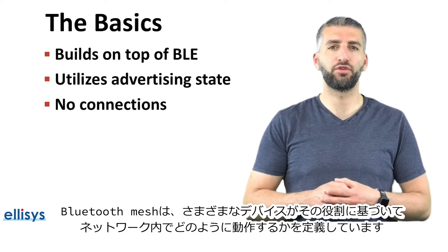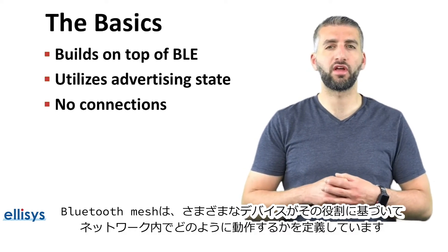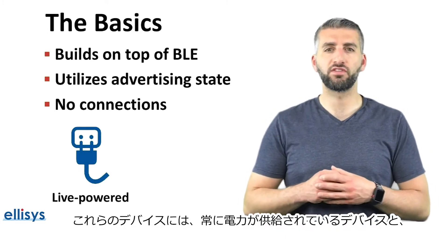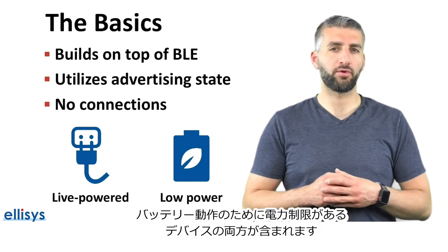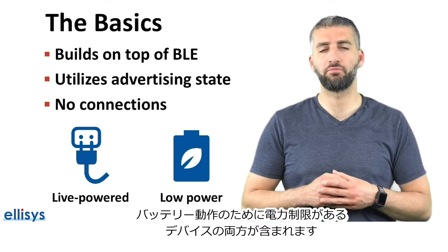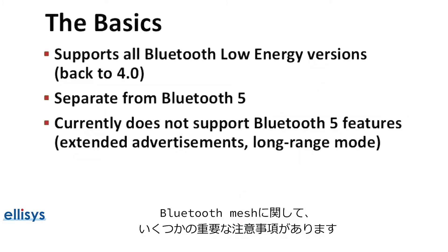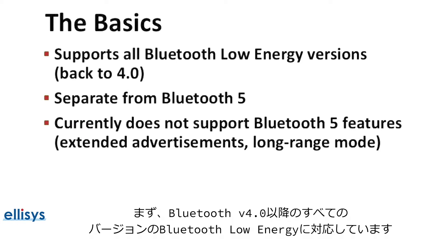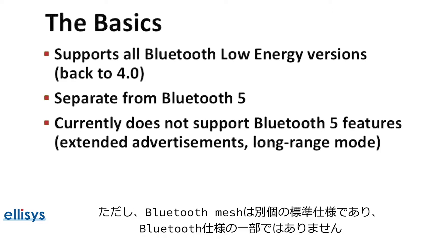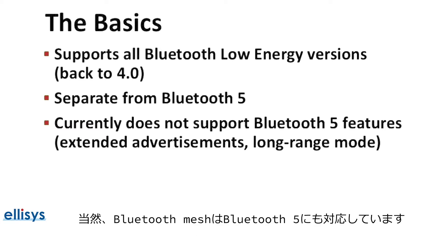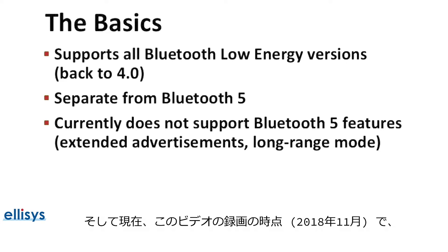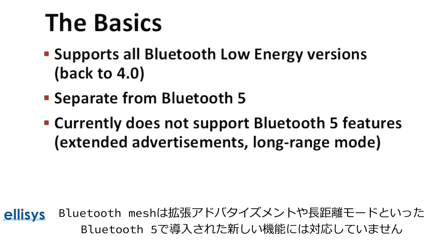The Bluetooth Mesh standard defines how different devices operate within the network based on their roles. These devices include both line-powered and more power-constrained ones that need to run on batteries. Bluetooth Mesh supports all versions of Bluetooth Low Energy going back to Bluetooth version 4.0. However, it is a separate specification and standard that's not part of the official Bluetooth specification, including Bluetooth 5. Currently, Bluetooth Mesh does not support new Bluetooth 5 features such as extended advertisements and the long-range mode.